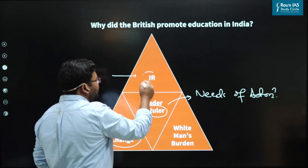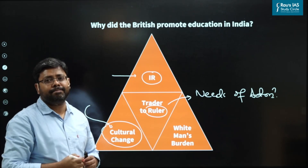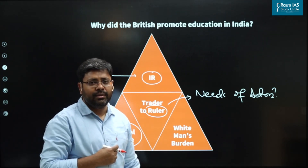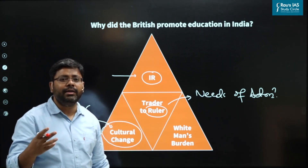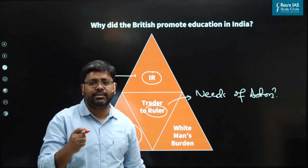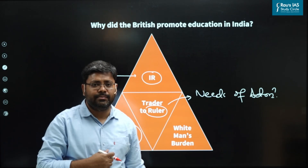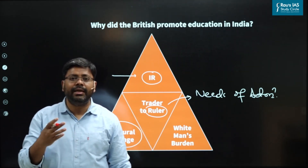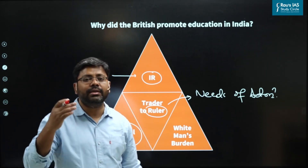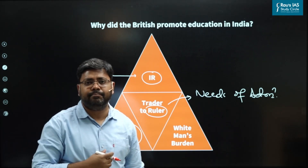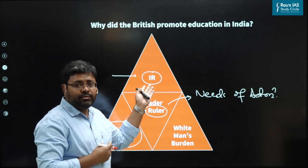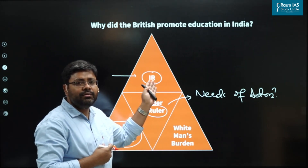The third factor was that the industrial revolution in England was intensifying. England was the first country in the world to witness the industrial revolution. The British were always inclined to make India a big market for their industrial products. The British wanted to bring education in India to bring cultural and behavioural changes among the Indians, and that would increase the demand for British industrial products. So another factor that prompted the British to bring a modern education system in India was to convert India into a market for their British industrial products.